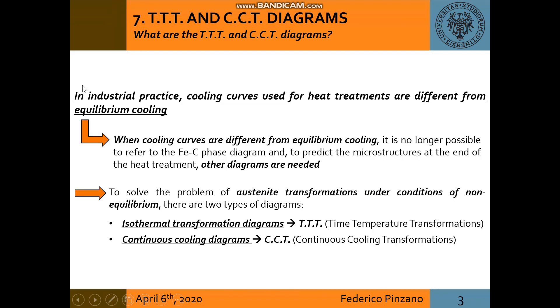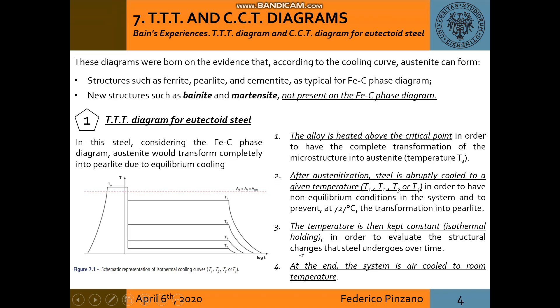In industrial practice, the cooling curves used for heat treatments are different from equilibrium cooling, and other diagrams are needed instead of a carbon phase diagram. There are two types of diagrams: isothermal transformation diagrams called TTT diagrams and continuous cooling diagrams called CCT diagrams. These diagrams were born once observed that austenite can also form new structures as bainite and martensite not present on the iron carbon phase diagram.